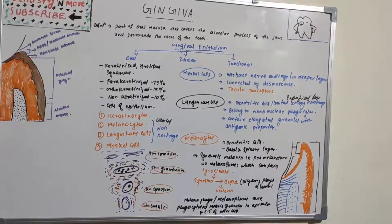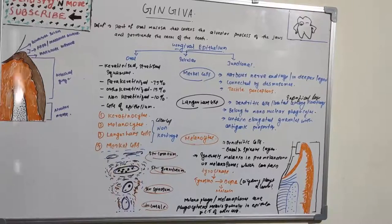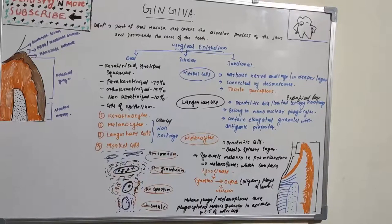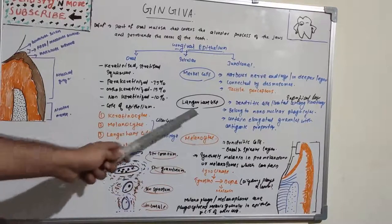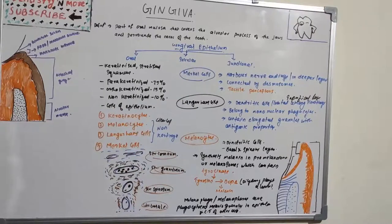So these are the basic cells of Gingiva: keratinocytes and non-keratinocytes (clear cells). Non-keratinocytes include melanocytes (involved in melanin production), Langerhans cells (antigenic properties), and Merkel cells (tactile receptors). These are commonly asked as short notes on gingival epithelium.